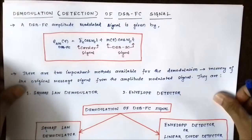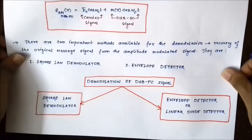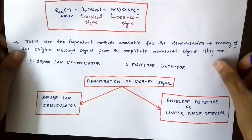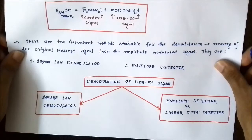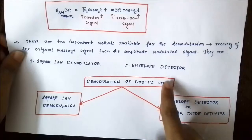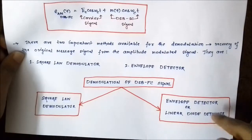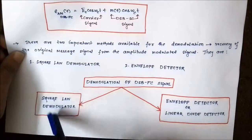For the demodulation of a double sideband full carrier signal, there are two popular methods which are commonly used. First, the square law demodulator, and second, the envelope detector — also called the linear diode detector. In today's video, we will be discussing about the square law demodulator.